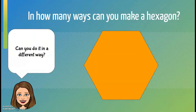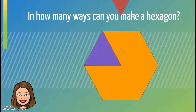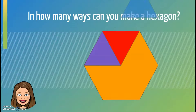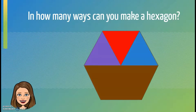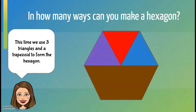Can we think of a different way of doing it? A triangle, another triangle, another triangle, and a trapezoid. This time, we used three triangles and a trapezoid to form the hexagon.